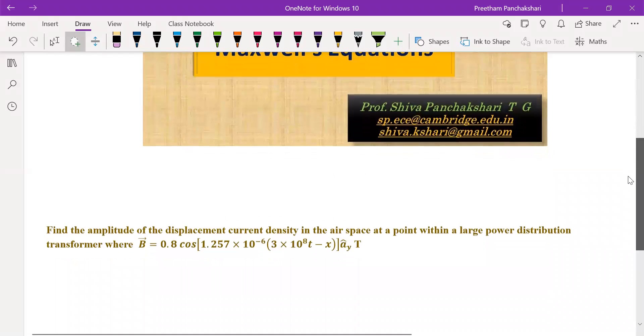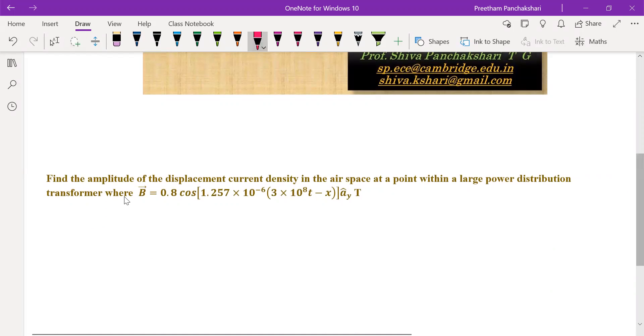Let us see the problem. In this problem, we have to find amplitude of the displacement current density. Displacement current density Jd is a vector. We want its amplitude. We know that Jd is given by ∂D/∂t. Differentiation of electric flux density with respect to time gives displacement current density in Amperes per meter square.